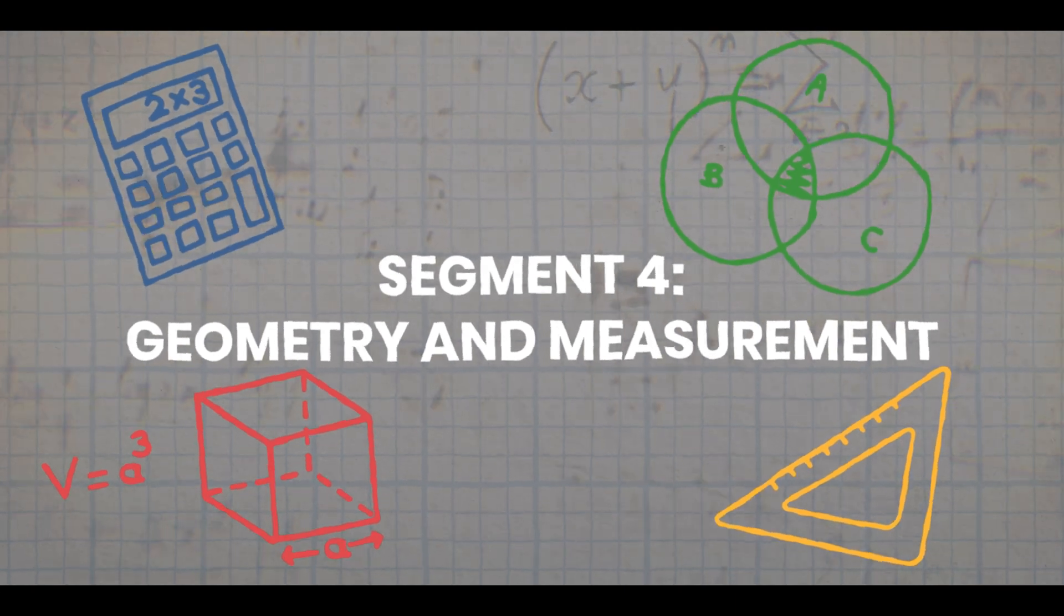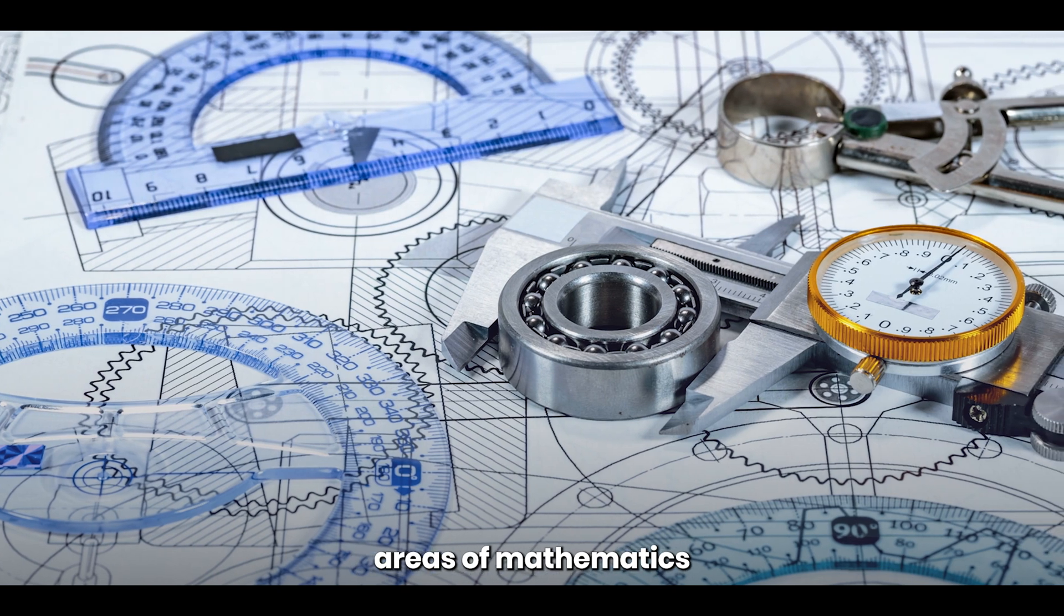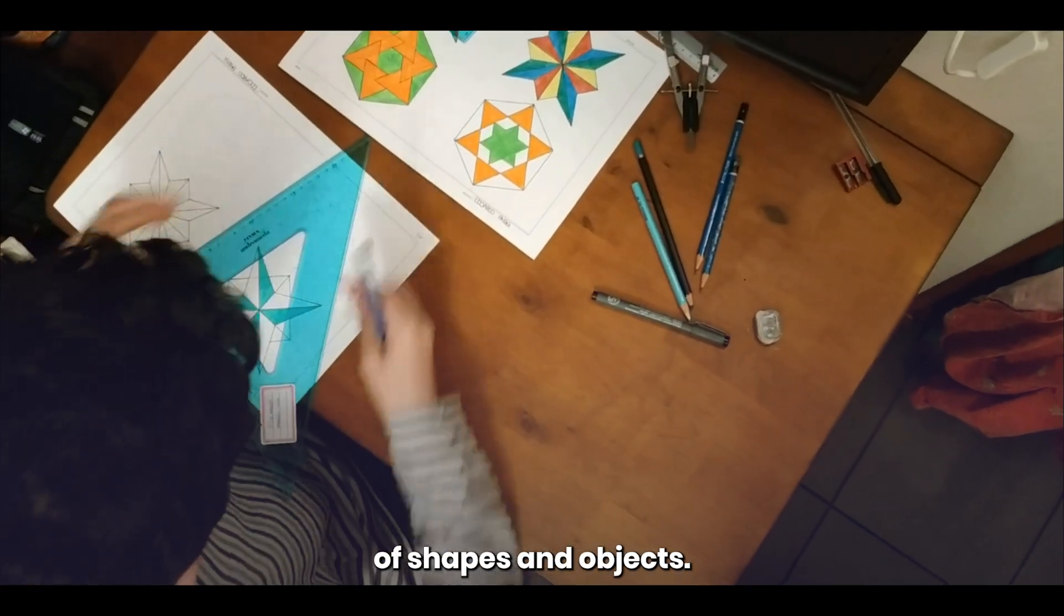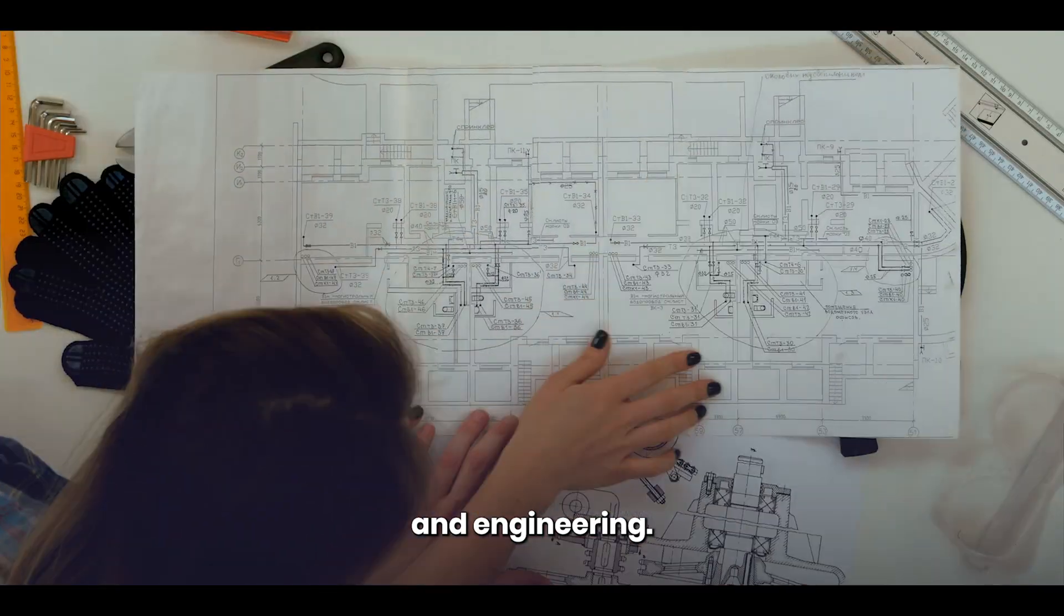Geometry and measurement. Geometry and measurement are fundamental areas of mathematics that deal with the properties and relationships of shapes and objects. Let's see how they can be applied in construction and engineering.